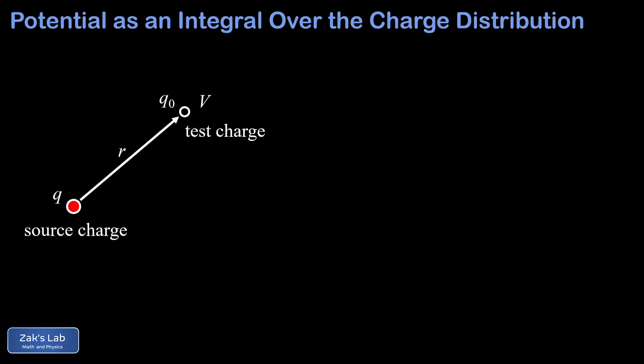Here's a source charge q and a test charge q-naught sitting at a separation distance of r. The electric potential energy between these two charges is given by q·q-naught over 4πε₀r. If you need a refresher on this, I'll post a link to my introduction to electric potential energy.